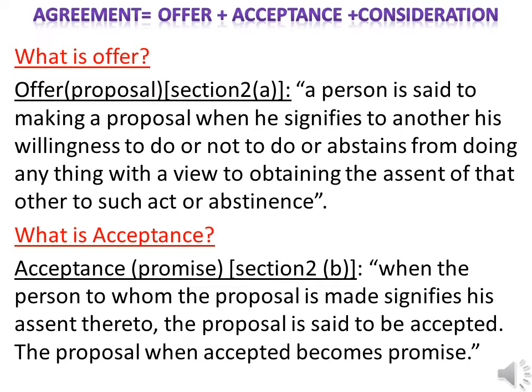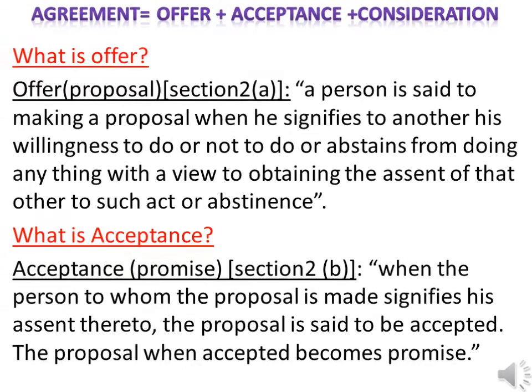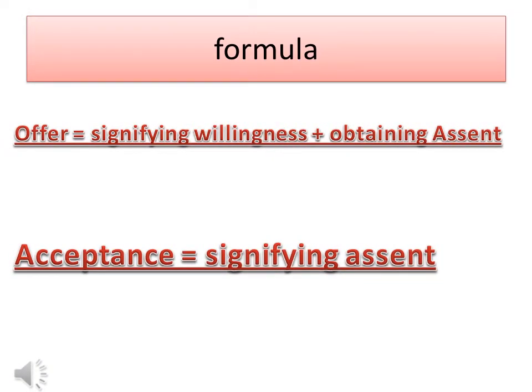What is acceptance? As per Section 2(b), when the person to whom the proposal is made signifies his assent thereto, the proposal is said to be accepted. The proposal when accepted becomes a promise. In summary: Offer equals signifying willingness plus obtaining assent; Acceptance equals signifying assent.